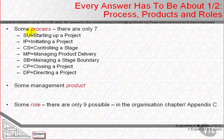The controlling a stage and managing a product delivery processes are the project manager and specialist team members building products and being in control of the progress created. There's the stage boundary process that refreshes plans each time we get to a position where we've worked forwards through a defined stage, but still have more project work to do. There's the closing the project process that says we're finished.